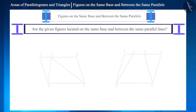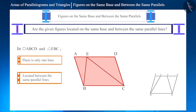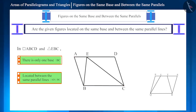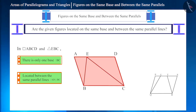Now let's see the last few figures. In the first figure, parallelogram ABCD and triangle EBC are located on the same base BC, and both are located between the same parallel lines AD and BC. Note that one of the two parallel lines is the base BC itself. Vertex E facing base BC of triangle EBC, and the vertices of base BC of parallelogram ABCD, lie on the parallel line AD.